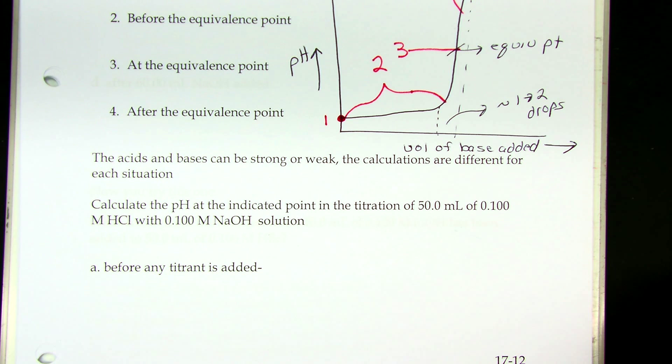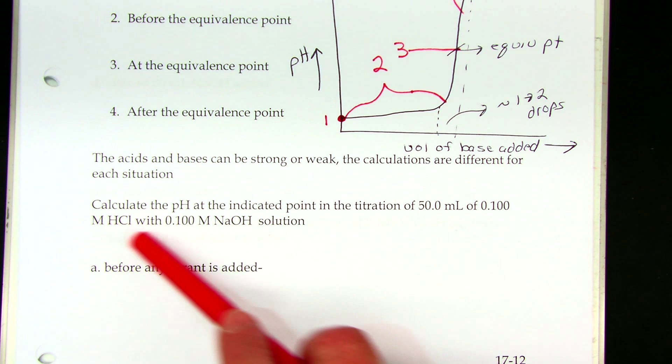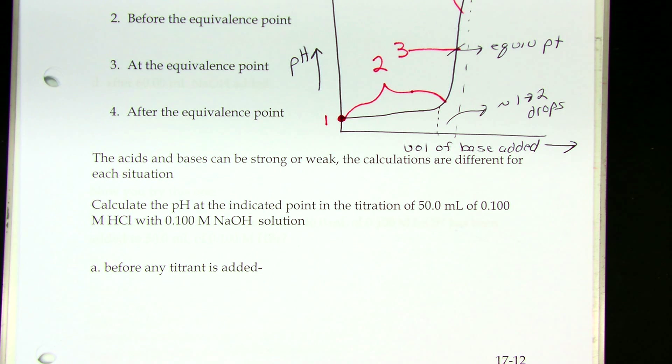Okay, so let's look at our first titration calculation. Calculate the pH at the indicated point in the titration of 50 milliliters of 0.1 molar HCl with 0.1 molar sodium hydroxide.